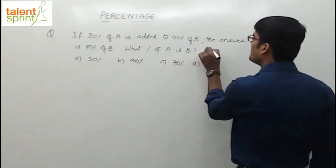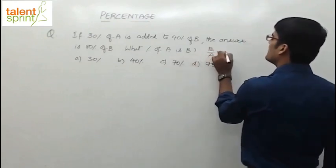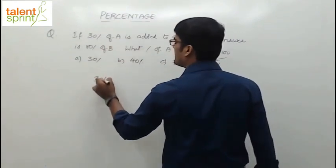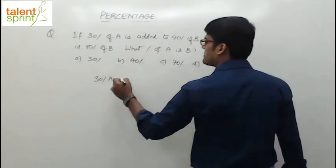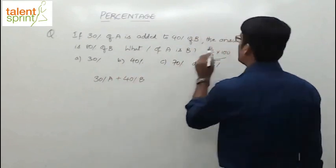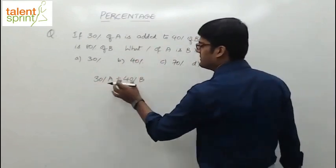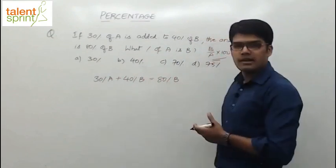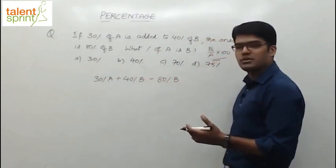So what you have to find here is B by A into 100. Just write the equation: 30% of A is added to 40% of B, the answer is 80% of B. So I can say 30% of A plus 40% of B equals 80% of B. Solve this and you have your answer.